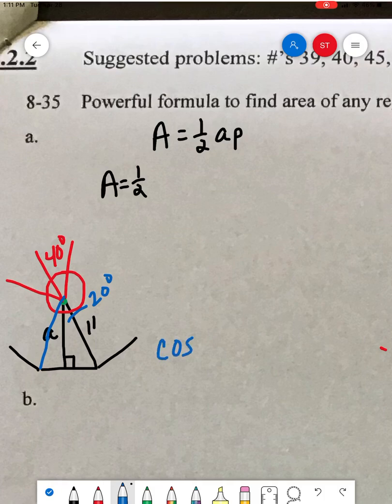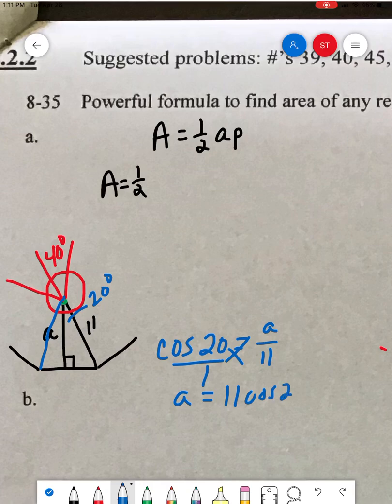So cosine of an angle, in this case it's 20 is equal to A/11. If we cross multiply, my apothem is equal to 11 cosine of 20. So I'm gonna put that right in here, 11 cosine of 20.